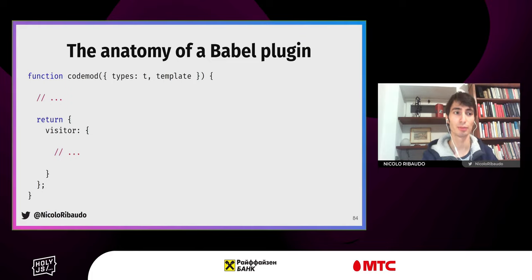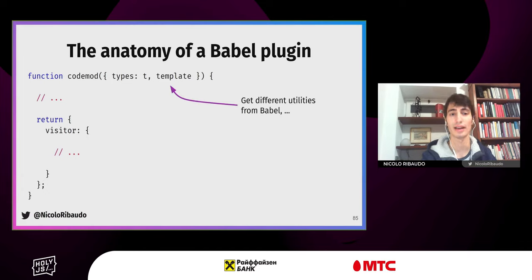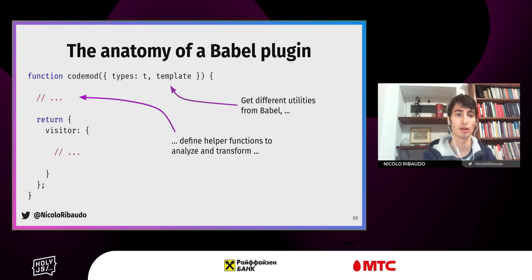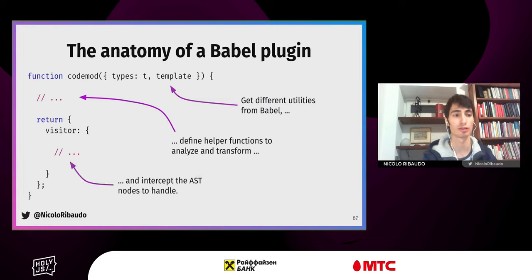Before actually building the demo, we need to understand the anatomy of a Babel plugin. Babel plugins are normal functions that take a single parameter containing different utilities from Babel — such as Babel types, which we can use to check the type of a given AST node or build new AST nodes, and Babel template, which we can use to build new pieces of code to inject in the final result. We define helper functions inside the plugin, then return a visitor containing event-listener-like handlers for every AST node we want to handle.